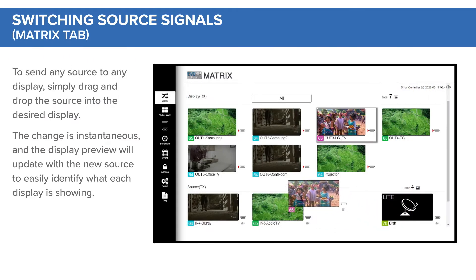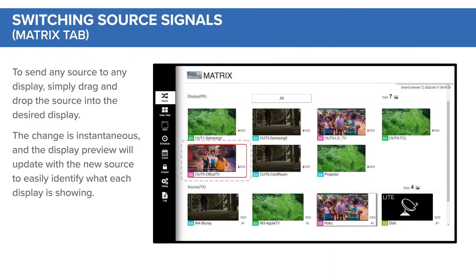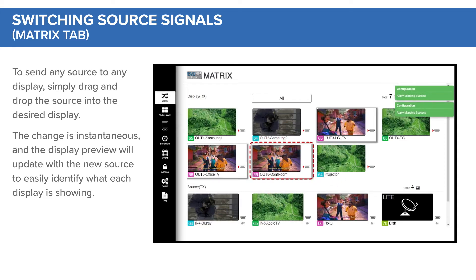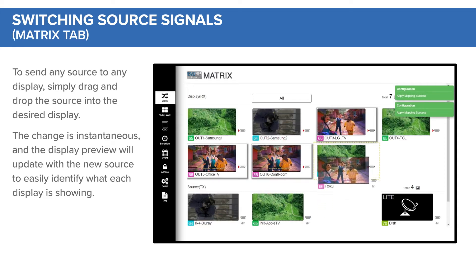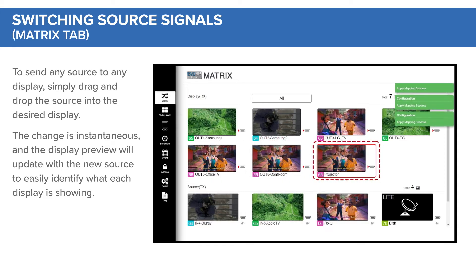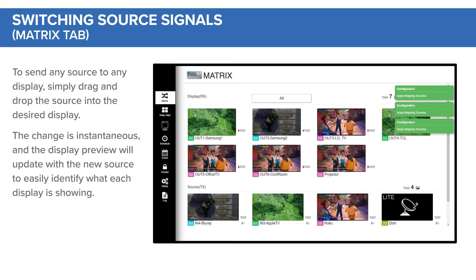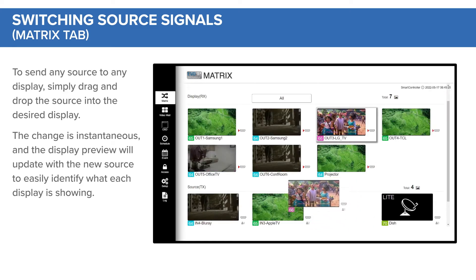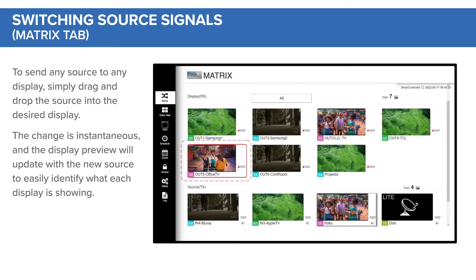To send any source to any display, simply drag and drop the source into the desired display. The change is instantaneous and the display preview will update with the new source to easily identify what each display is showing.